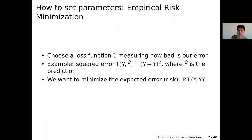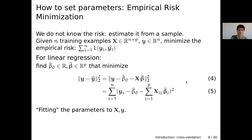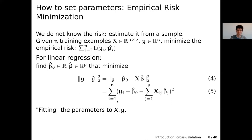Of course, we don't know this expectation — we have no way to measure it directly. So we estimate it from a sample: we draw training examples, for example images and diagnoses for N patients, and use this to compute the empirical risk. We choose parameters that minimize this empirical risk — the sum of errors on all our training examples — and this is what we call fitting the parameters of the model to X and Y.